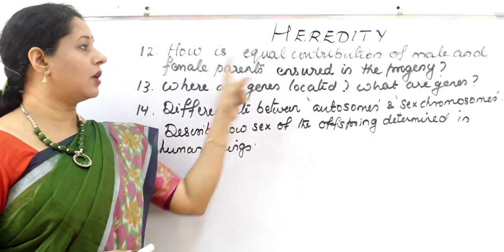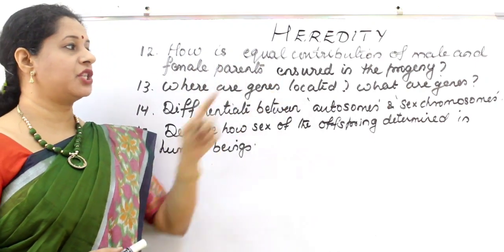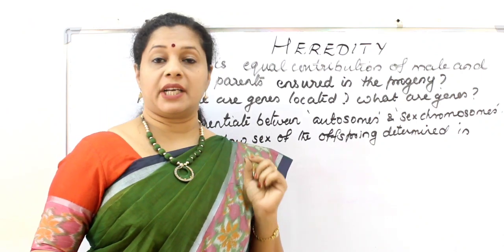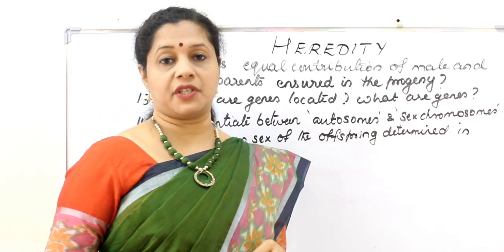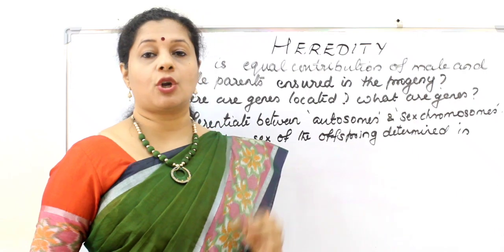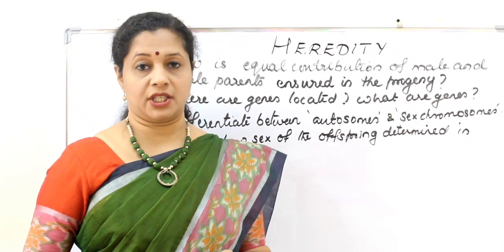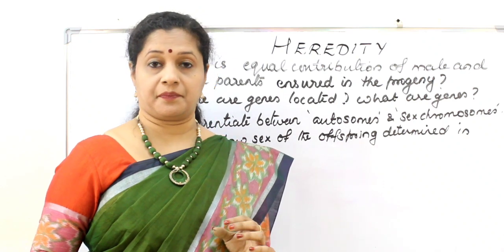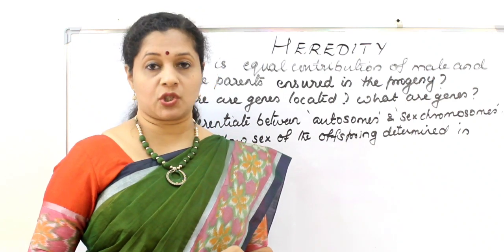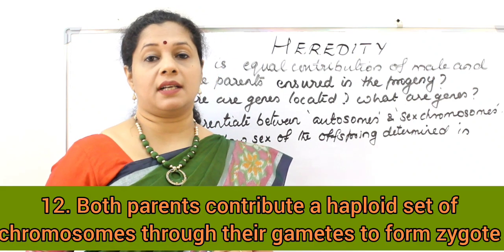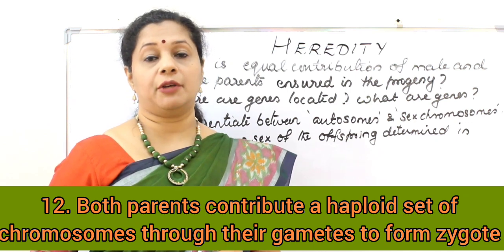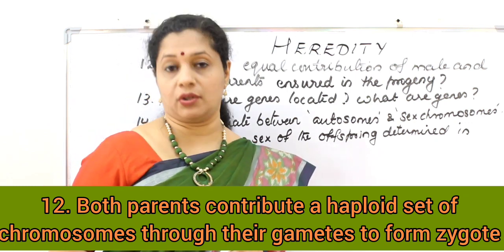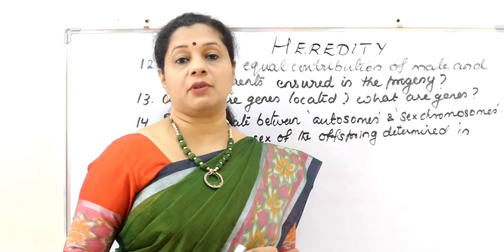How is the equal contribution of male and female parents ensured in the progeny? During gamete formation through meiosis — the reduction division — the chromosome number is halved. The sperm carries 23 chromosomes and the egg carries 23 chromosomes. When they fuse, each parent contributes 23 chromosomes equally to the offspring.